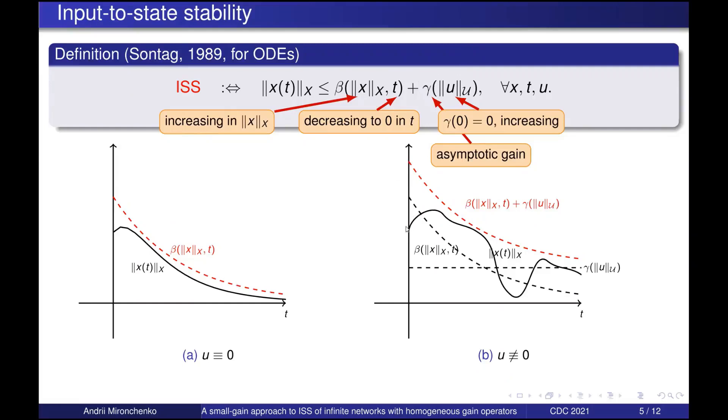So if we start somewhere here and this is our trajectory, then its norm is upper bounded as a sum of beta and gamma in this way. Since beta decays to zero when time goes to infinity, then our trajectory eventually approaches the ball with the radius gamma of norm of u around the origin.